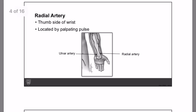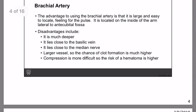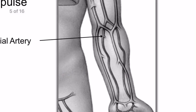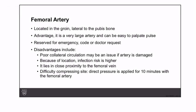If you can't find the radial artery, use the brachial artery. Its advantage is that it is large and easy to locate by feeling for the pulse. However, its disadvantages are that it is much deeper, lies close to the basilic veins and the median nerve, and larger vessels, making clot formation more likely, compression more difficult, and the risk of hematoma higher. Use it only when the radial artery is unavailable.